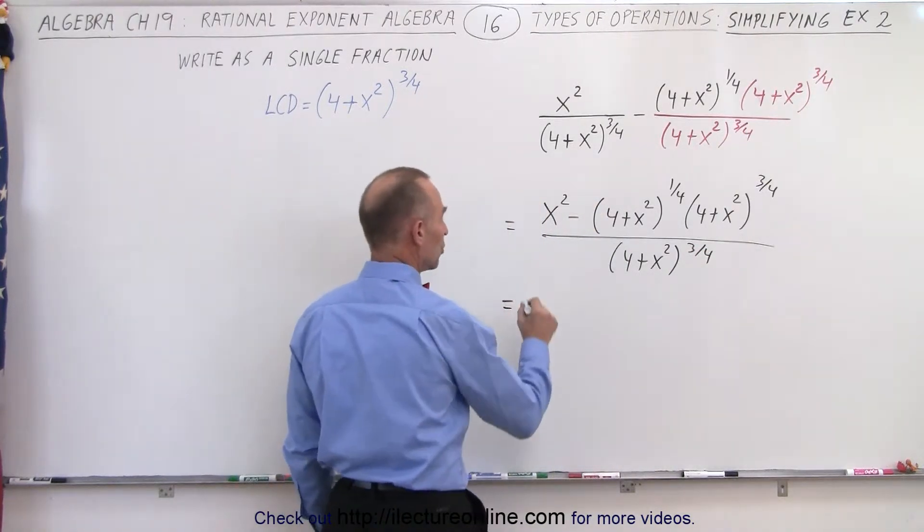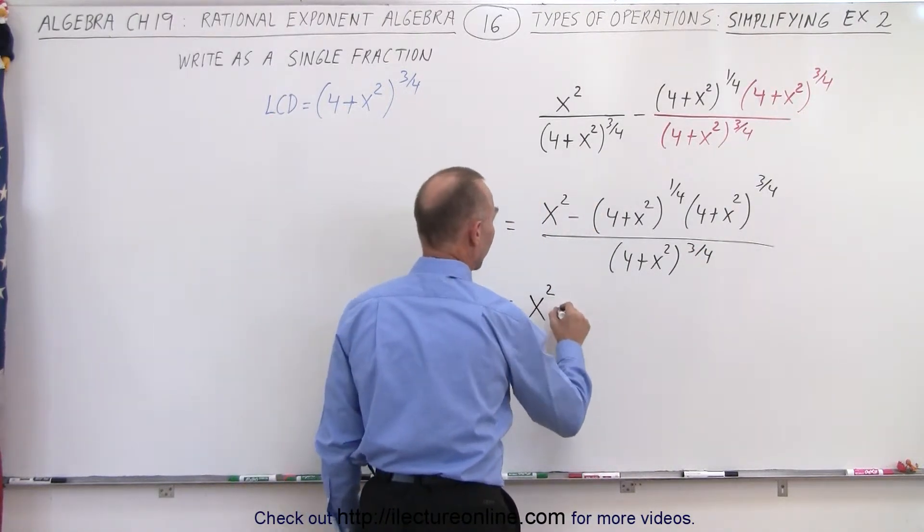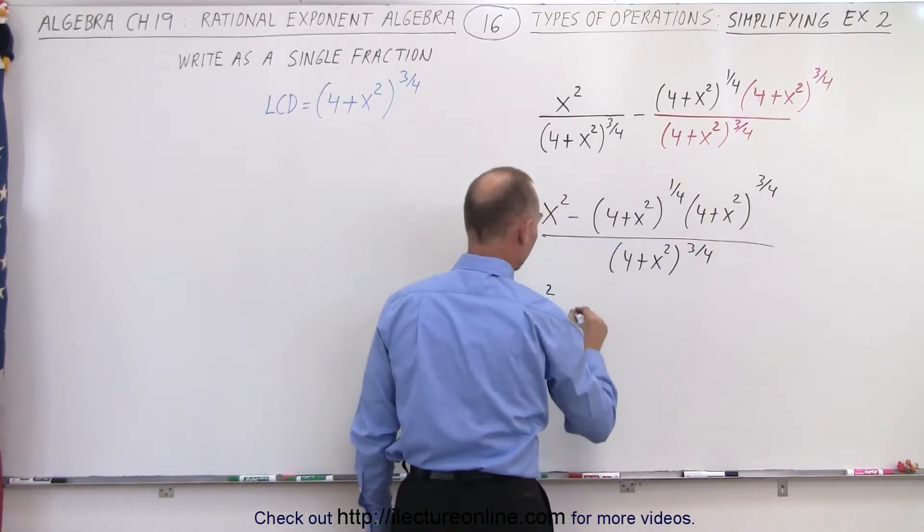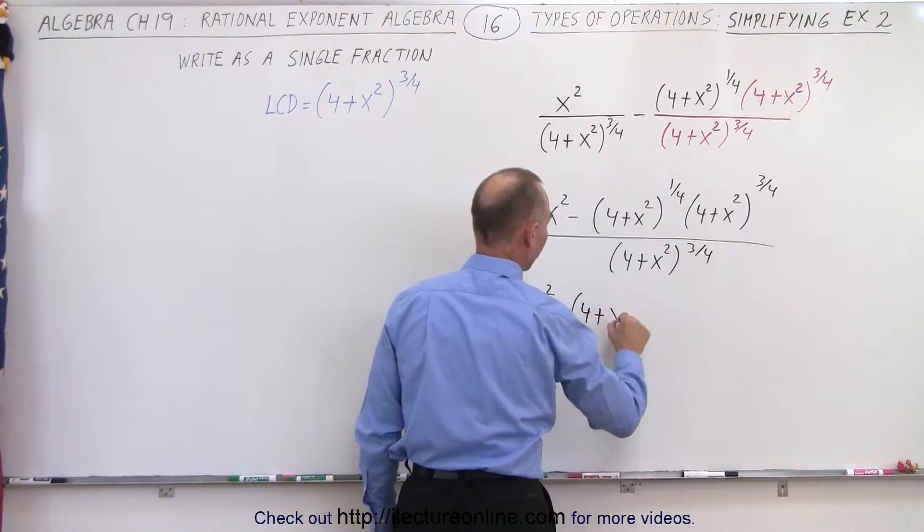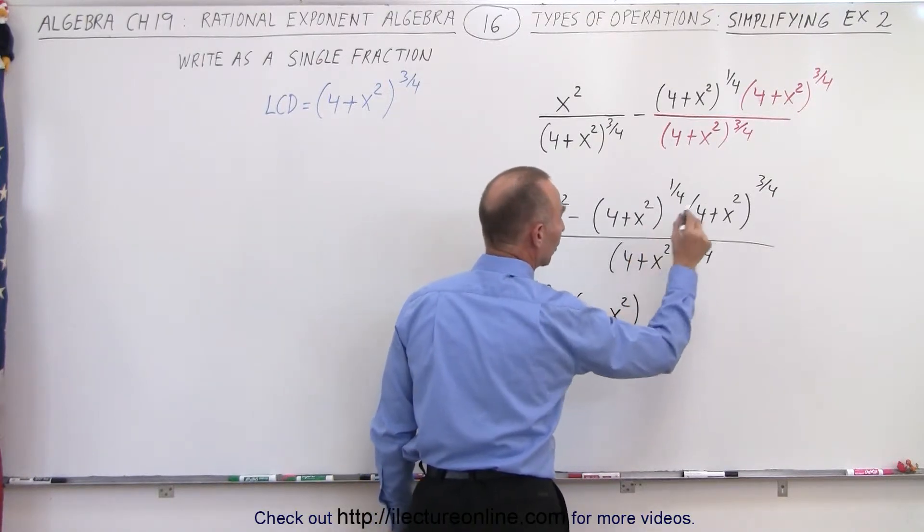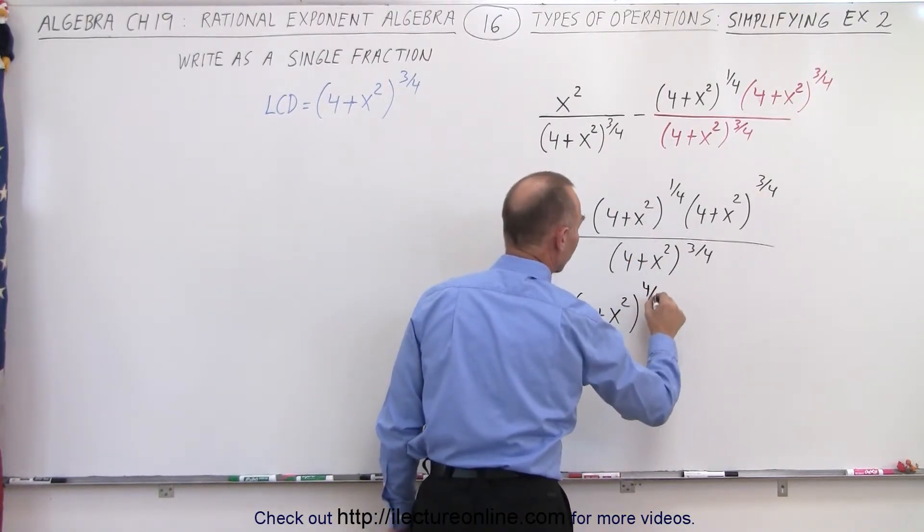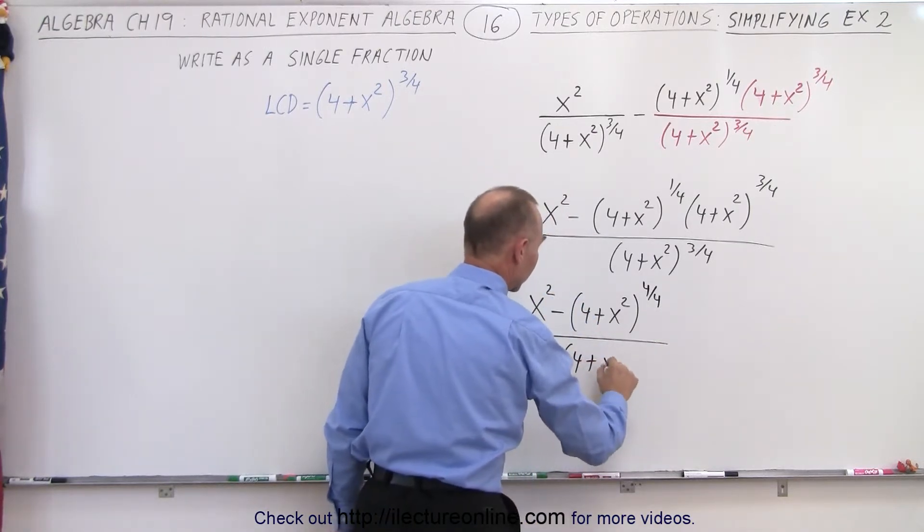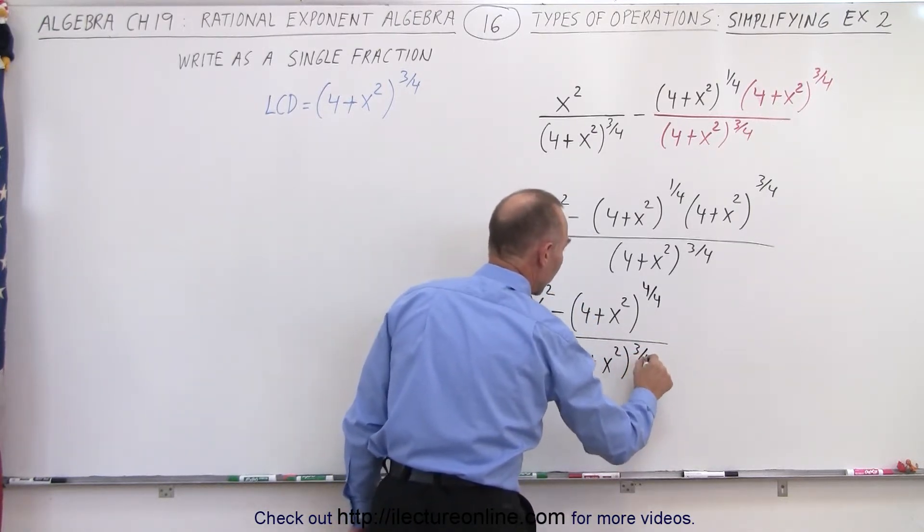So this becomes equal to x² minus, now here since the bases are the same we're going to add exponents, so this becomes (4+x²) to the 1/4 plus 3/4, or 4/4 power, all divided by (4+x²) to the 3/4 power.